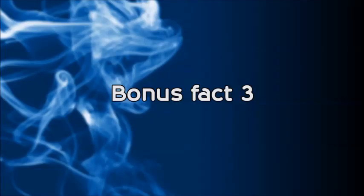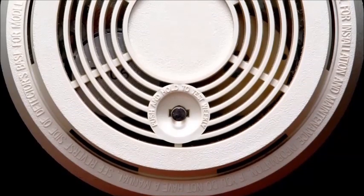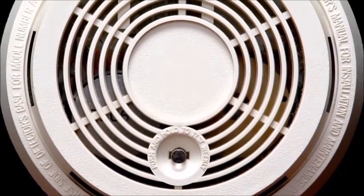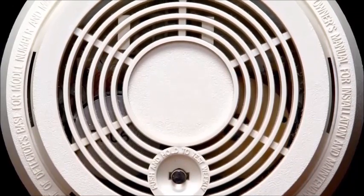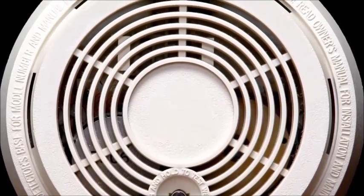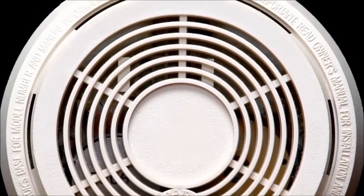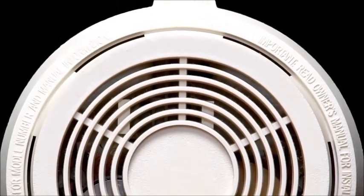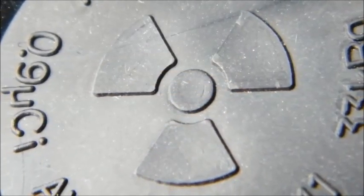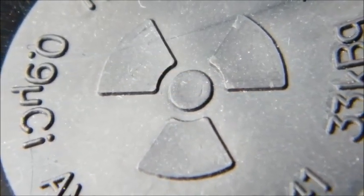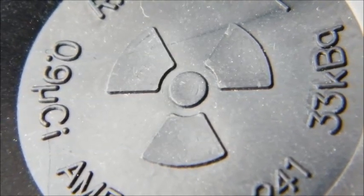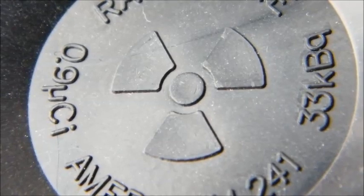Bonus Fact 3: The first ionization chamber for the purposes of detecting smoke was inadvertently discovered by Walter Yeager in the 1930s while he was attempting to develop a poison gas detector. In the early 1940s, Yeager and Mellie got together and created the first edition of an ionization detector that we use today. This first attempt used an enormous power supply and required a 220-volt system. It wasn't until the 1960s that americium-241 was used, requiring much less voltage.